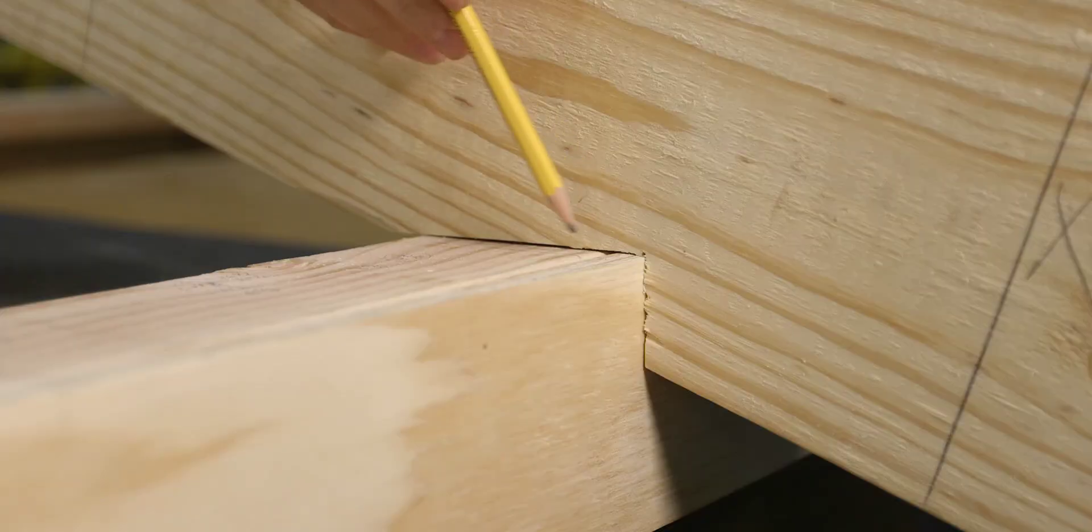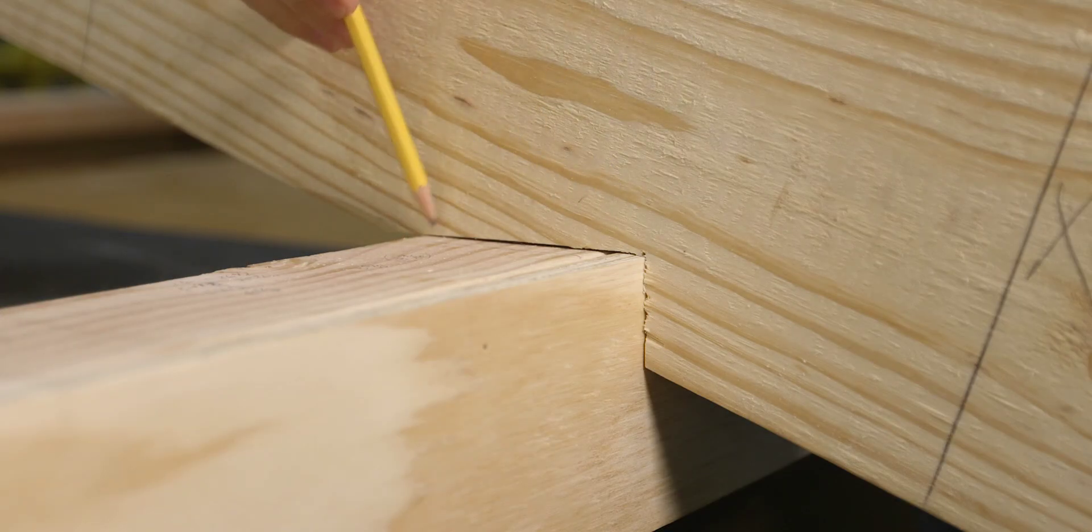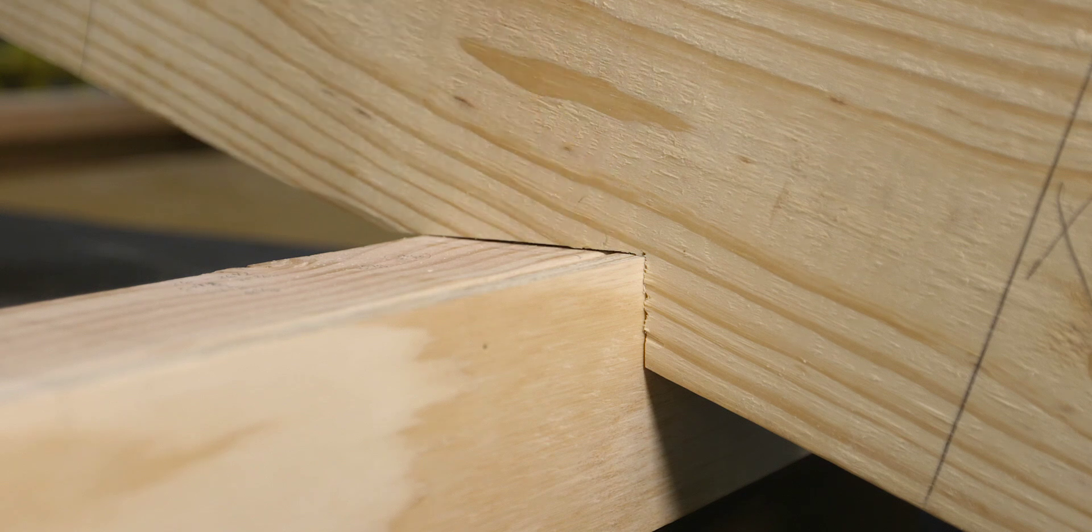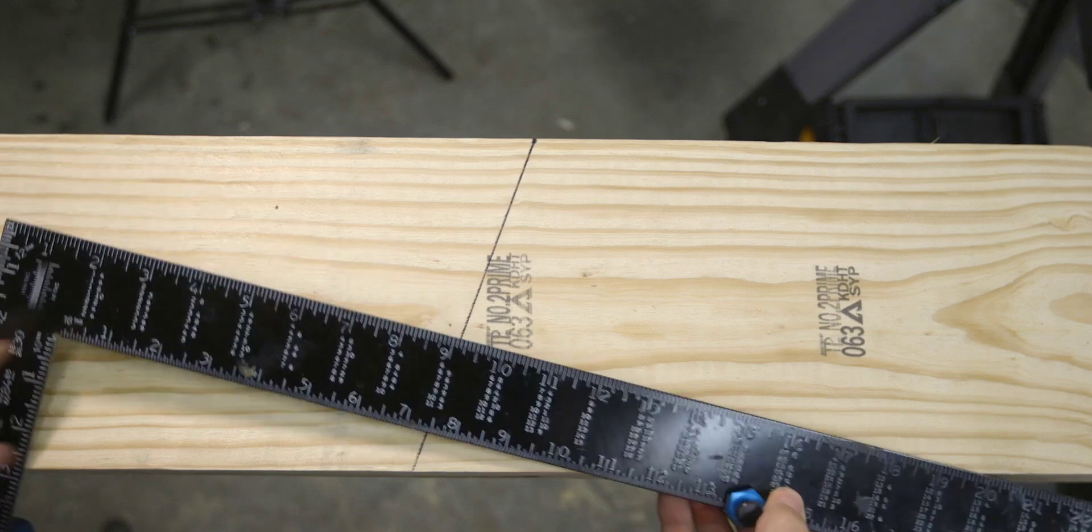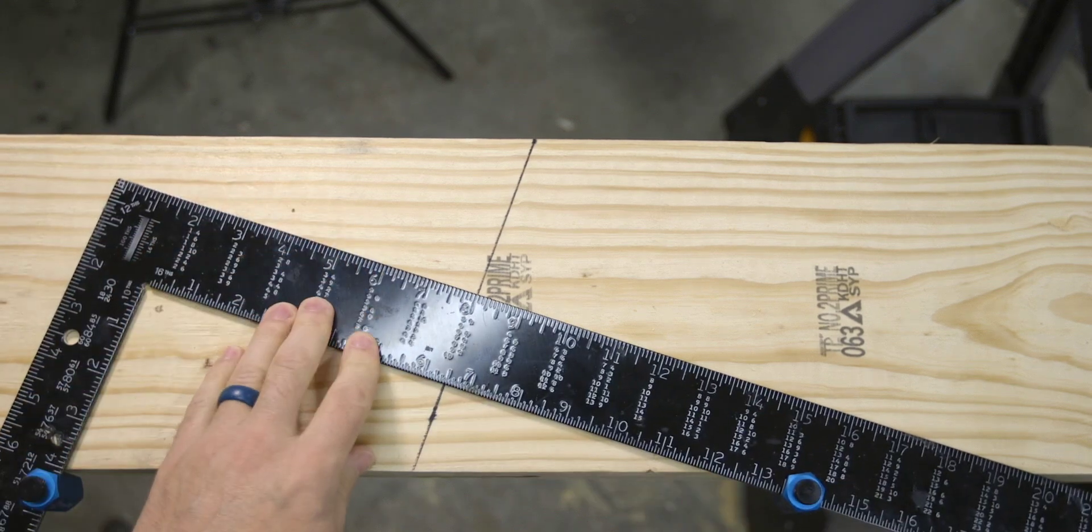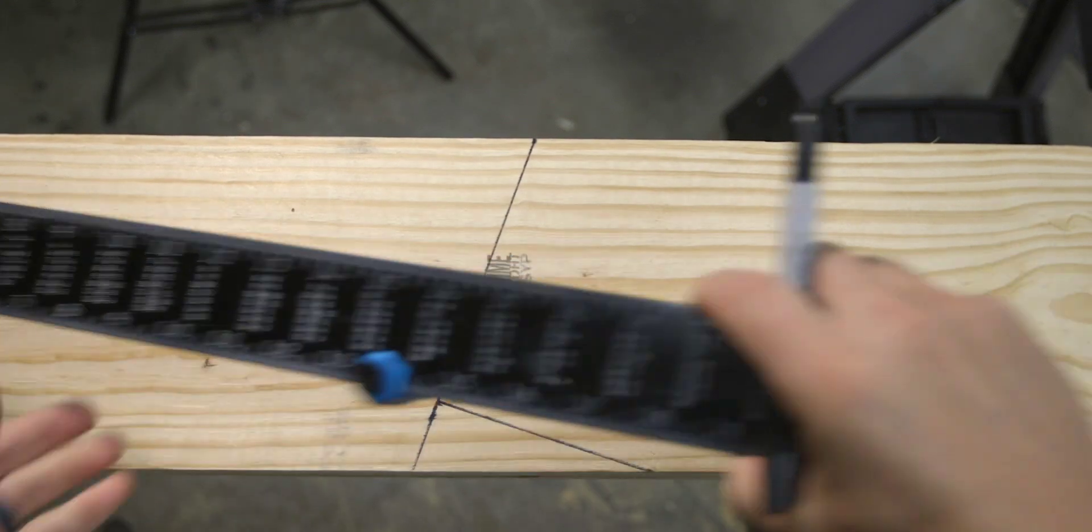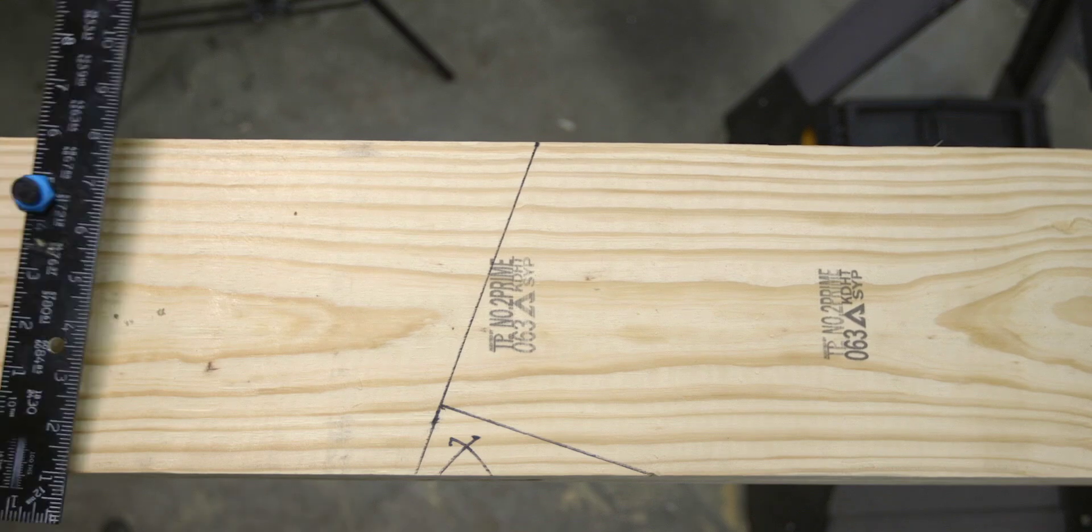Generally, the seat cut of the bird's mouth is the same length as the top plate and the exterior sheathing combined, or something really close to that. Next, flip the square around so you can measure over for the seat cut, draw a line, and this is the bird's mouth, which gets cut out.